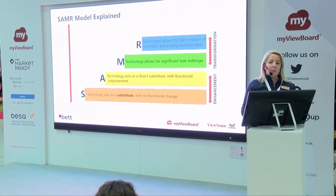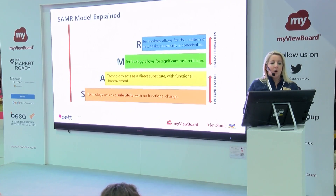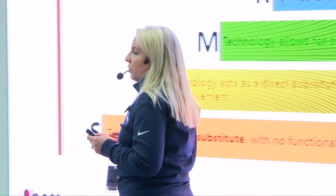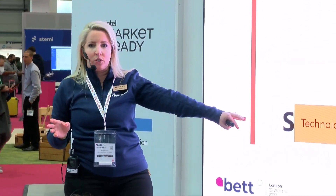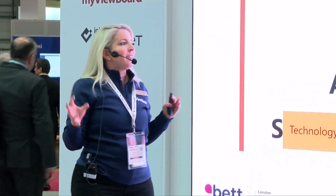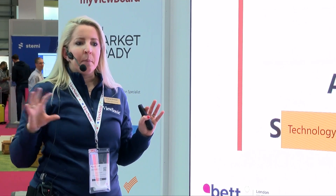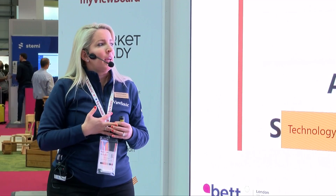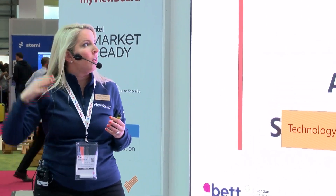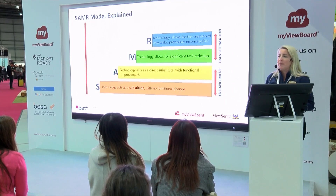Now let's talk about student engagement — student engagement here equals success. What do those items mean? Substitution is when technology is just acting as a substitute with no functional change. Augmentation is when technology is acting as a substitute but with a little bit of a functional improvement. For modification, we're allowing a significant task redesign, taking it to the next level. And when we're redefining, we're creating new tasks that were previously simply inconceivable without technology.